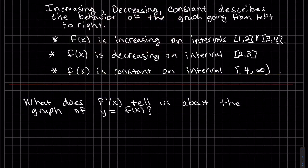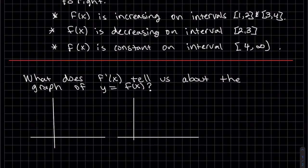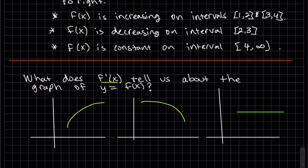So what does the derivative of the function tell us about the graph of the function? Let's look at a couple of pictures here. The derivative of the function is the slope. So let's look at that slope, that slope, and that slope at various points x_i.